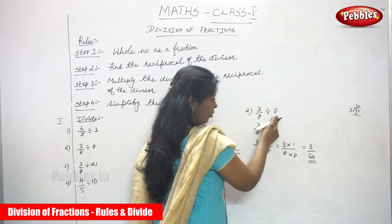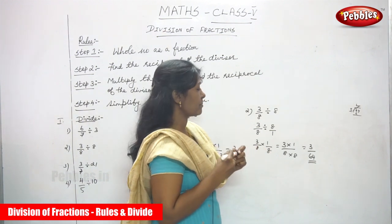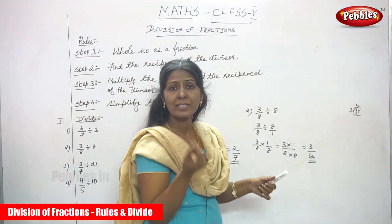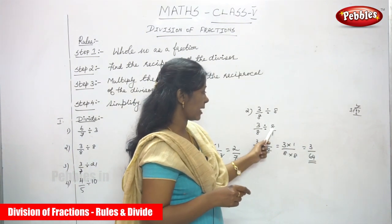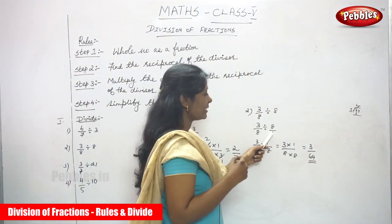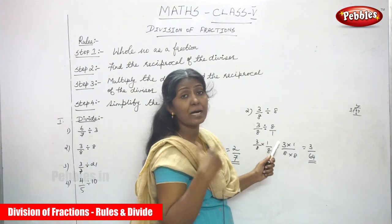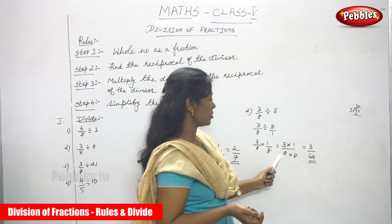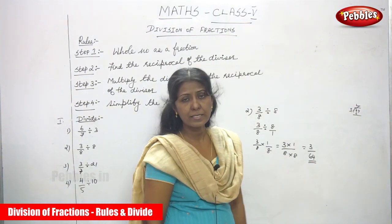To recap: 3/8 divided by 8 — 3/8 is the fraction and 8 is the whole number. I convert 8 to a fraction: 8/1. The dividend is 3/8, and I reciprocate the divisor 8/1 to get 1/8. Multiplying: 3 × 1 over 8 × 8 gives 3/64. The answer is 3/64.